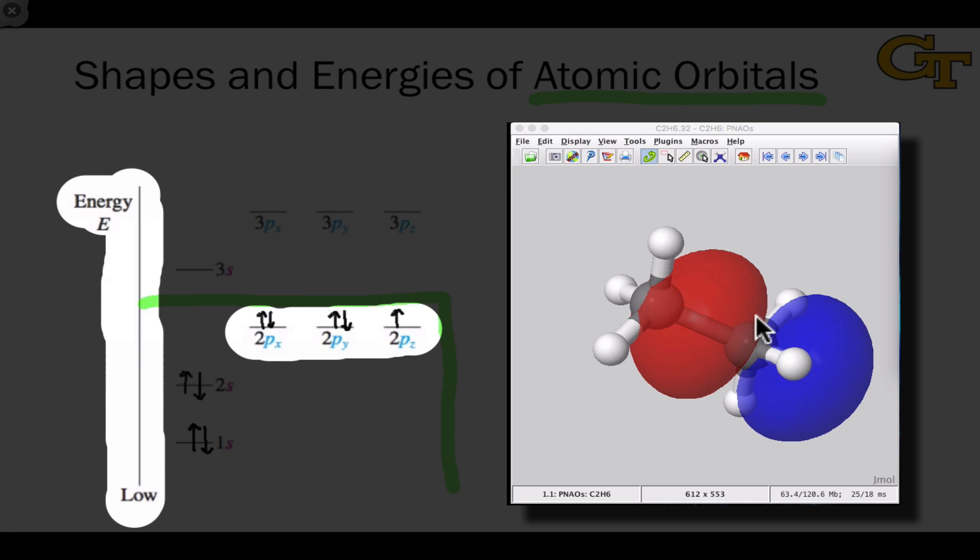Like the 2s orbital, the 2p orbital is large enough in shape to engage in bonding with the hydrogens and with the other carbon atom. And so it too is going to be an important player in the bonding of this carbon with other atoms in organic molecules.